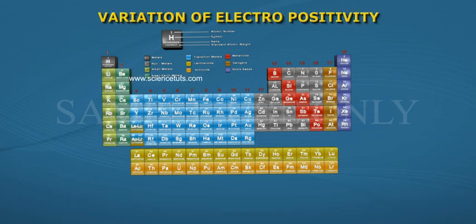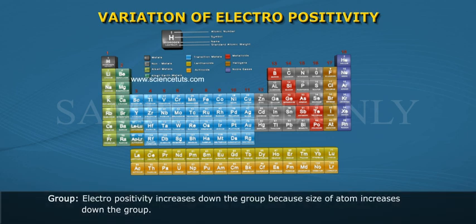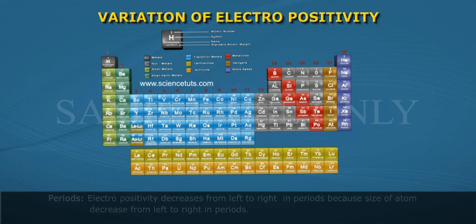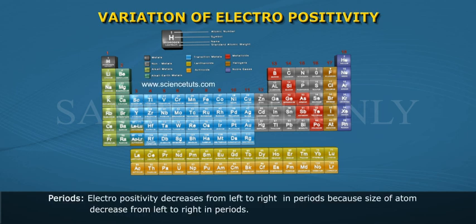Variation of electropositivity: Groups - Electropositivity increases down the group because size of atom increases down the group. Periods - Electropositivity decreases from left to right in periods because size of atom decreases from left to right in periods.